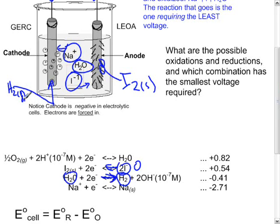The cathode is negative in electrolytic cells. That's different from electrochemicals, and that's because electrons are being forced in to force this reaction to occur.